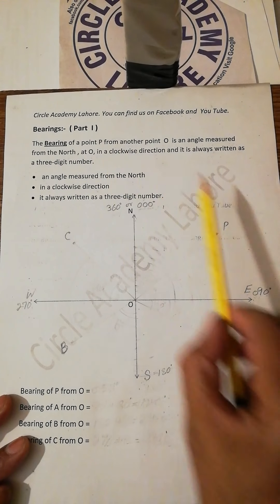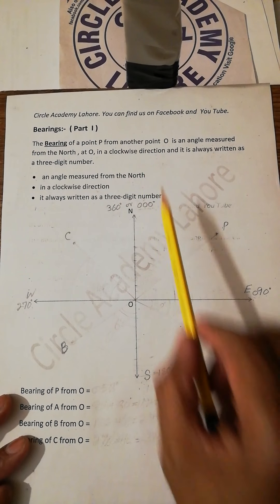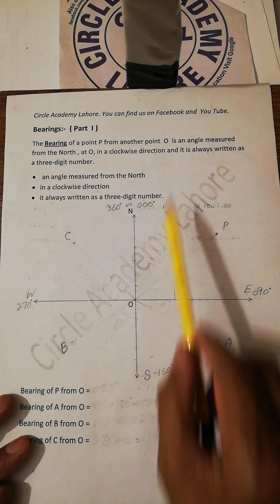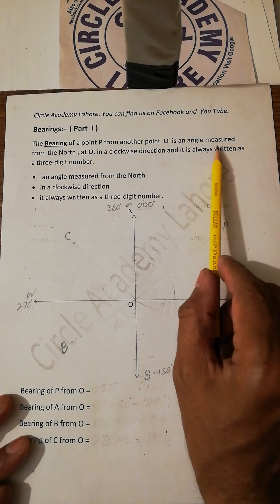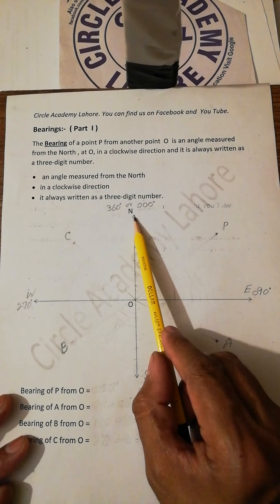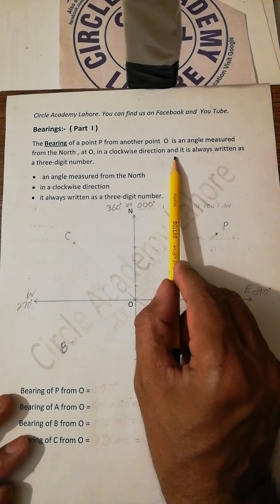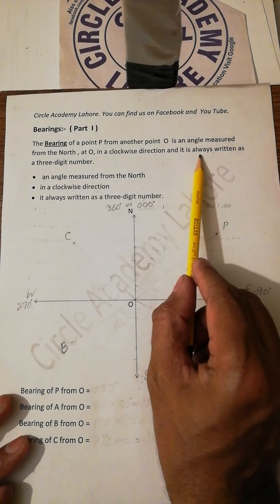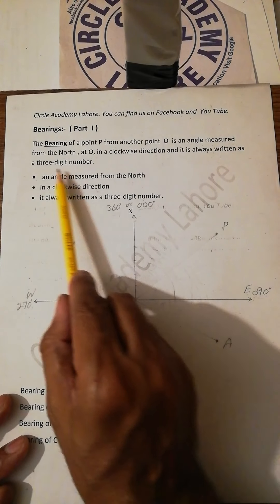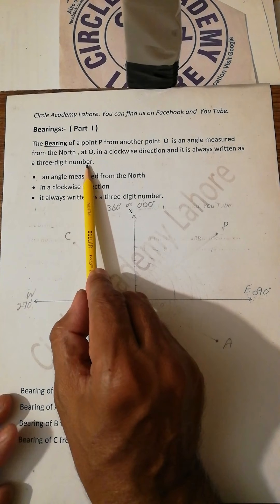The bearing of a point P from another point O is an angle measured from north at O in a clockwise direction, and it is always written as a three digit number.